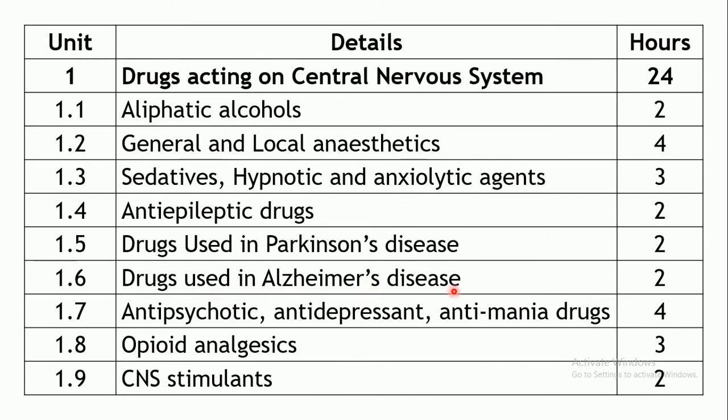The next chapter is drugs used in Alzheimer's disease, where memory may get affected — it is a type of dementia with memory loss usually found in elderly patients, though nowadays it also coexists in younger individuals. Two hours are allotted for this chapter.